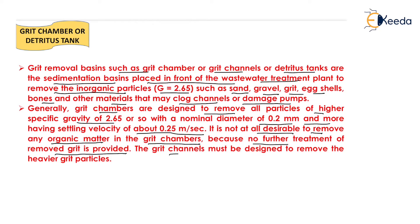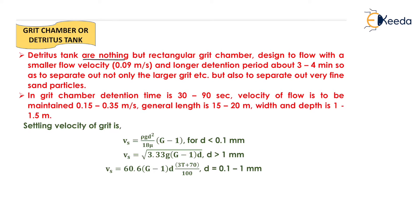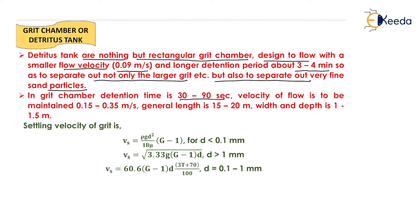Grit channels must be designed to remove only the heavier grit particles. Grit chambers are designed to remove all particles of specific gravity 2.65 or higher, with a nominal diameter of 0.2 mm or more, having a settling velocity of about 0.25 m/s — meaning the velocity in the grit chamber is generally kept at 0.25 m/s. Detritus tanks are rectangular grit chambers designed for a smaller flow velocity, with a longer detention period of about 3 to 4 minutes and a velocity of 0.09 m/s, so as to separate out not only larger grit but also very fine sand particles.